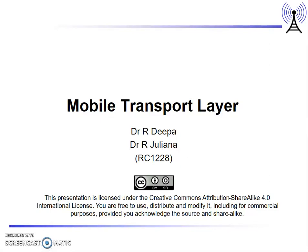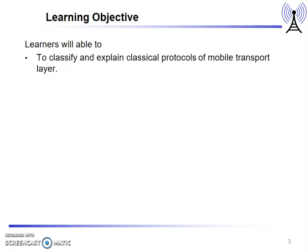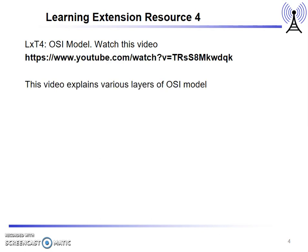Good morning. Today's session will cover the protocols of mobile transport layer. The outline includes learning objectives, learning extension resources for transport layer, motivation, TCP mechanisms, influences of mobile mobility on TCP mechanisms, and some classical protocols like indirect TCP, snooping TCP, and mobile TCP. The outcome of this session is that learners will be able to classify and explain classical protocols of mobile transport layer.